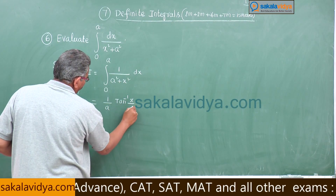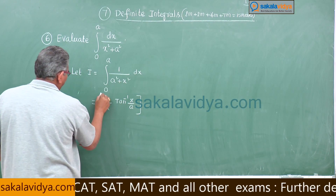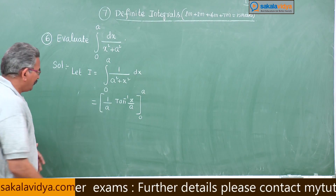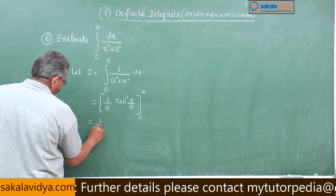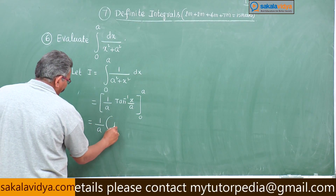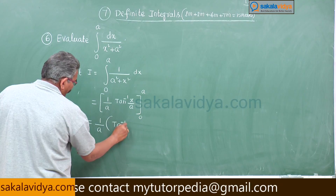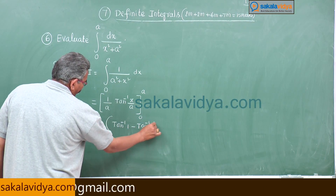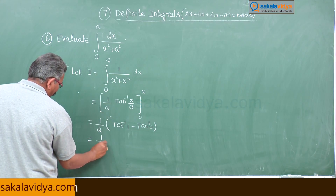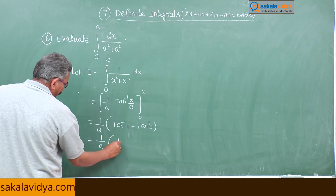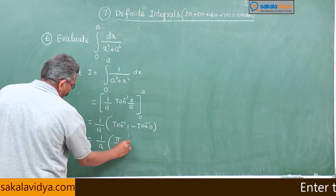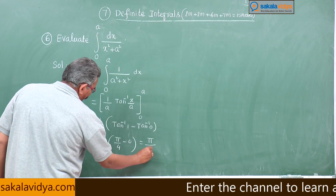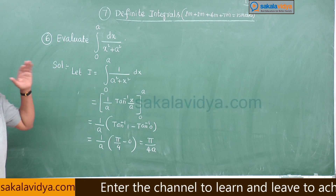Taking out the constant 1 by a and substituting limits: tan inverse (a by a) minus tan inverse 0. Tan inverse 1 equals π/4, and tan inverse 0 equals 0. So the answer is π by (4a).